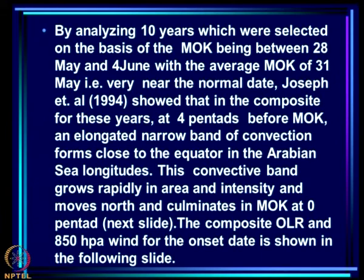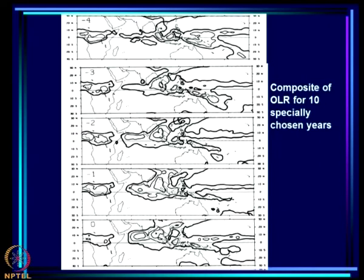By analyzing 10 years selected on the basis of MOK falling between May 28th and June 4th (average MOK of May 31st, very near the normal date), Joseph et al. showed in composites that four pentads before MOK an elongated narrow band of convection forms close to the equator in the Arabian Sea longitude. This convective band grows rapidly in area and intensity, moves northward, and culminates in MOK at the zero pentad.